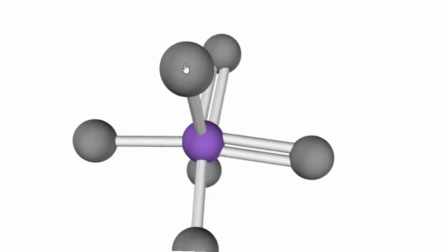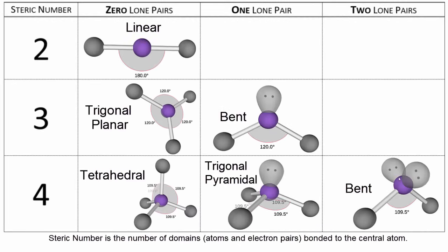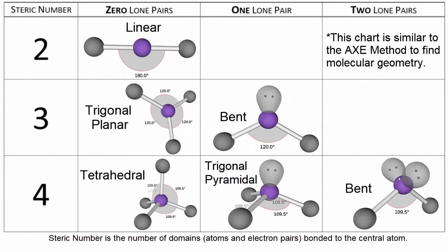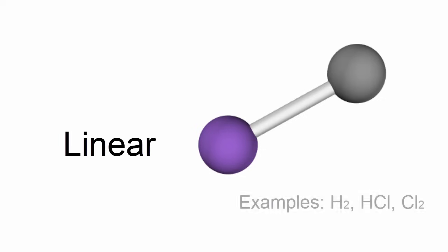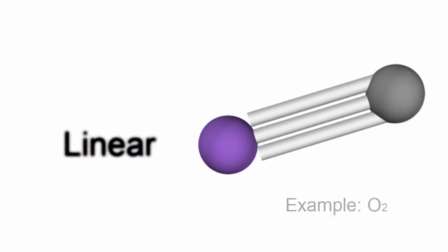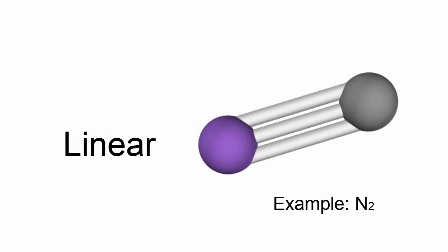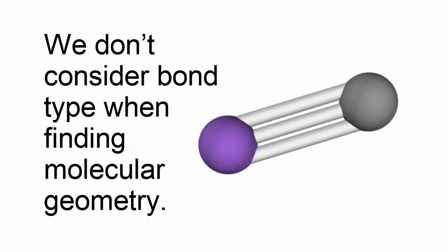Now that we have an idea about VSEPR, let's put it to work and go through each of the major molecular shapes. We use our chart here to help us organize our ideas and build our memory as we learn. It's often assumed that you'll know that if we have two atoms, it's going to be linear. What you should know, though, is it really doesn't matter if we have single bonds, double bonds, or triple bonds — it's still going to have a linear molecular geometry, and that goes for all of the structures we'll look at today. The type of bond — single, double, triple — doesn't influence the molecular geometry.